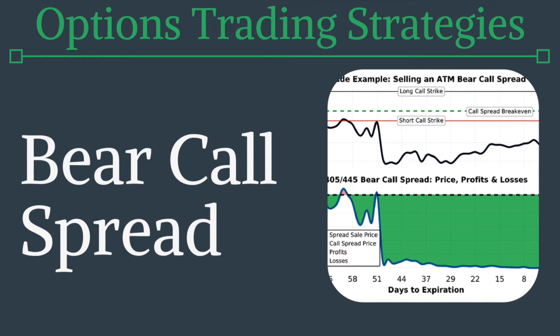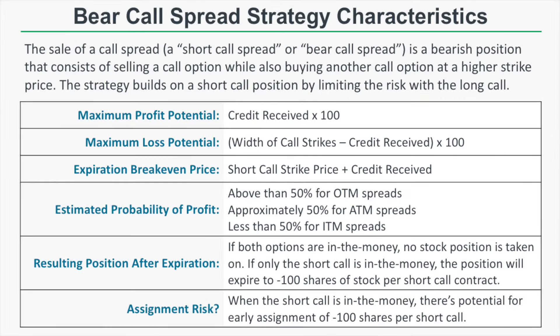The sale of a call spread is also sometimes referred to as a short call spread, a bear call spread, or a call credit spread. This is a bearish position that consists of selling a call option while also buying another call option at a higher strike price.